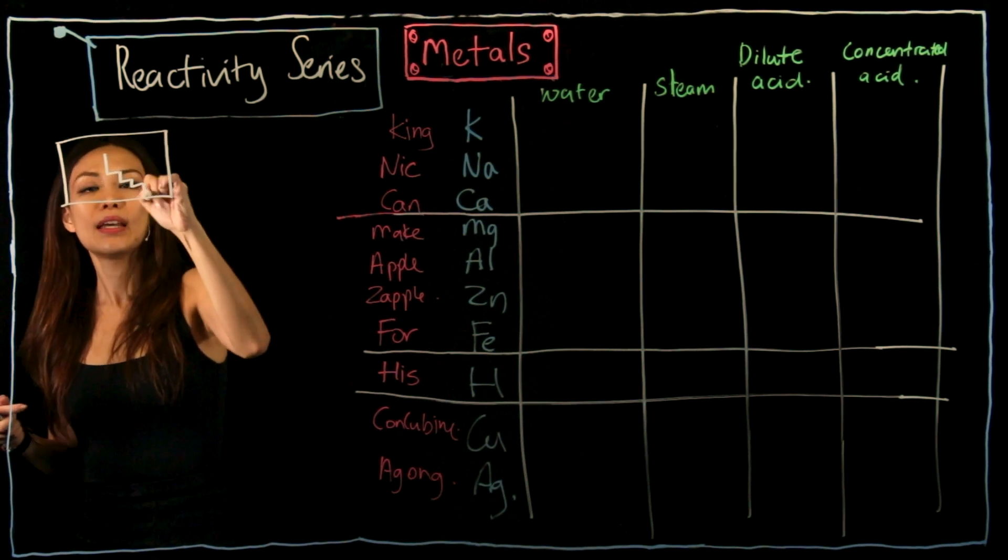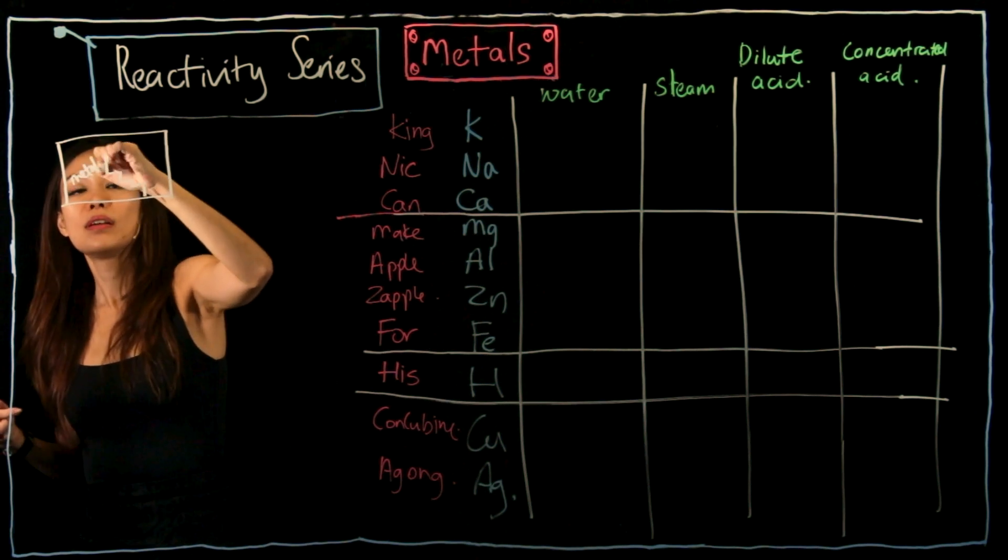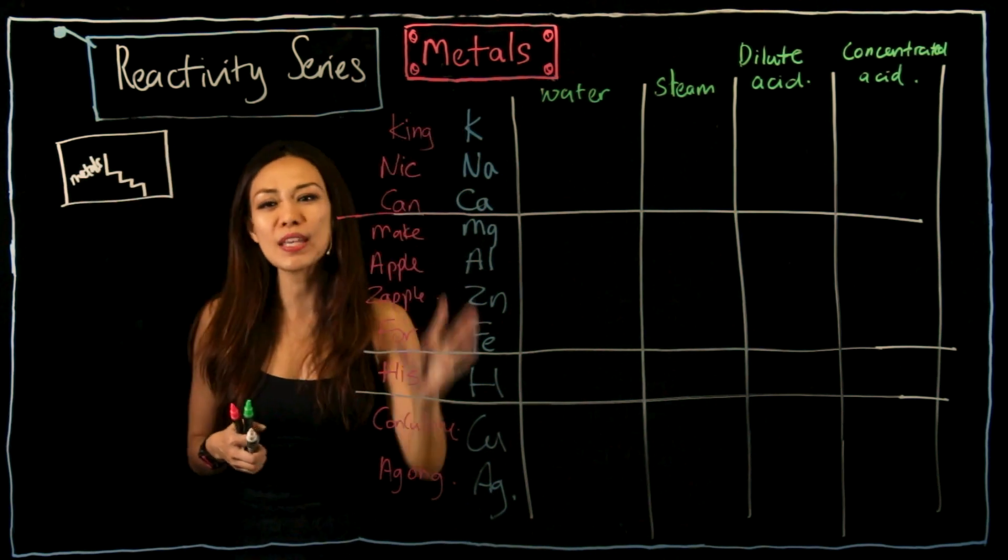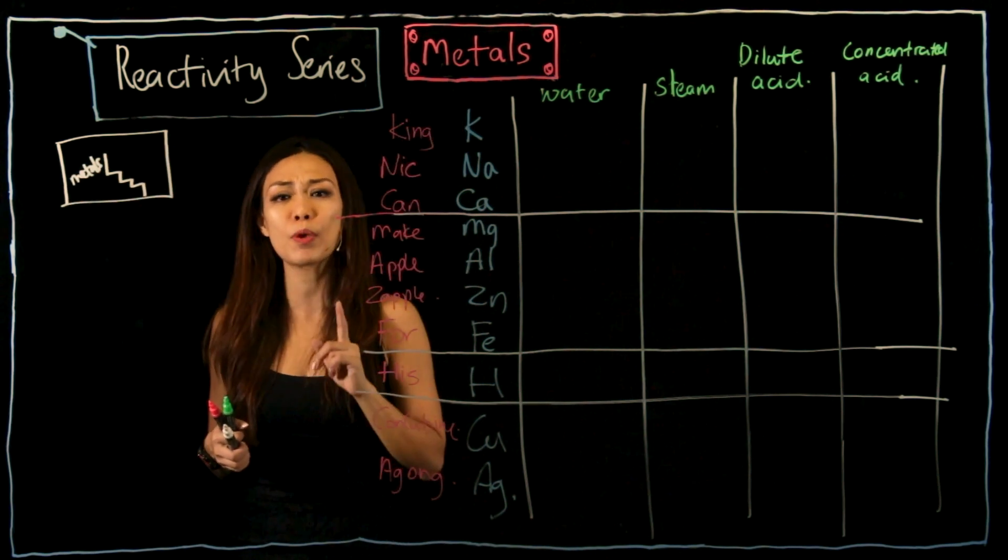we drew the staircase. This side are your metals, this side are your non-metals. So when I come up with this entire table, some of you will be wondering, what determines who is most reactive?